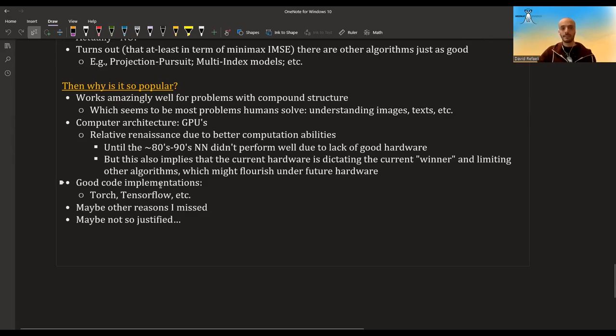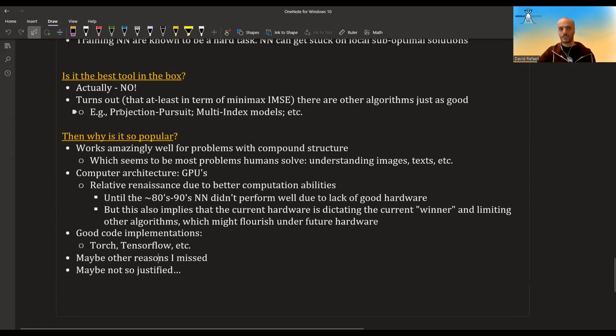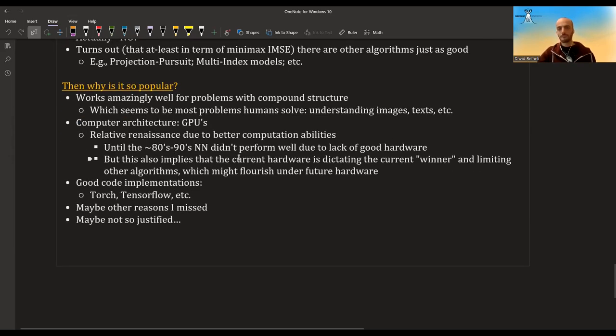Another reason is that maybe they have better code implementation. There's a lot of frameworks that help you implement neural networks. There's Torch, TensorFlow, etc. I'm sure there's reasons I missed. If you know any, please leave them in the comments. Maybe also it's not so justified that they are so popular. Maybe projection pursuit is actually better, but no one heard of it. I don't know. I'm not an expert. Anyway, this is all for this video. I hope it gave you a good introduction to this topic and made you a little bit less afraid of neural networks. In future videos, we will go deeper and look more in depth into neural networks. I hope you enjoyed this video and see you in the next one.